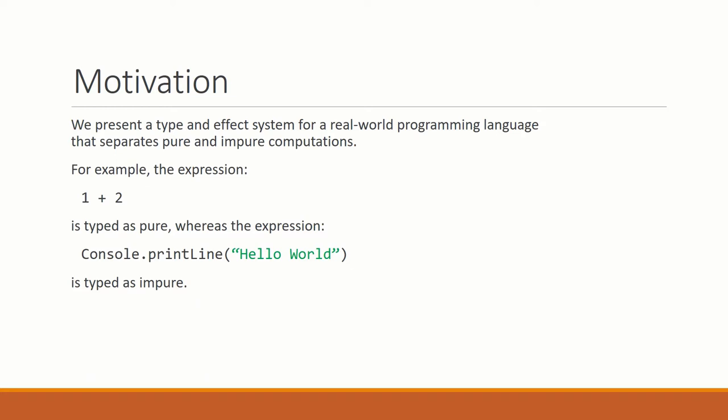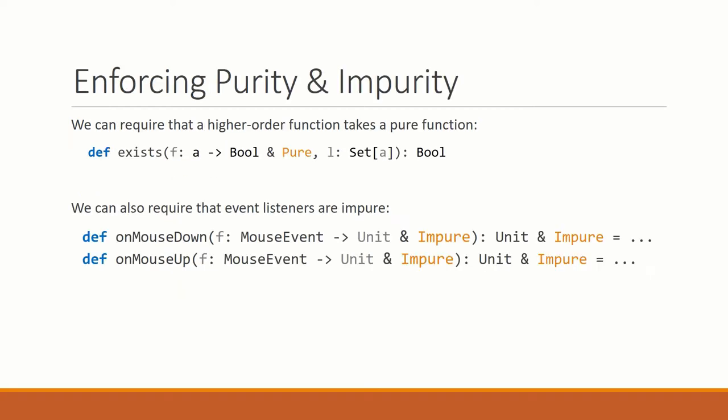What we want is to design a type and effect system for a real-world programming language that can separate pure and impure computations. For example, the expression 1 plus 2 is pure, whereas the expression print line hello world is impure.